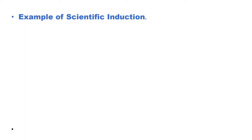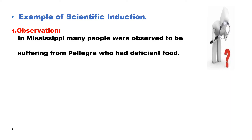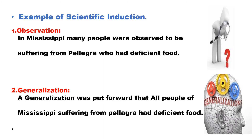Now let us understand scientific induction with an example. The first stage is observation. It was observed that in Mississippi, many people were suffering from pellagra who had a deficient diet. So a generalization was made on the basis of the observation of a few people: all people of Mississippi suffering from pellagra had a deficient diet. This was the generalization.